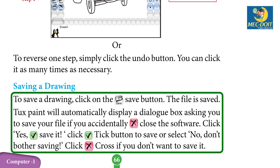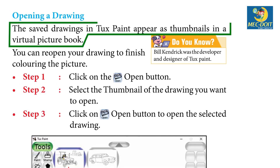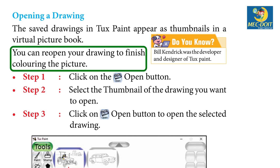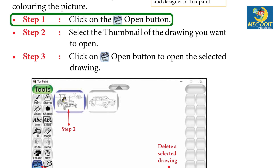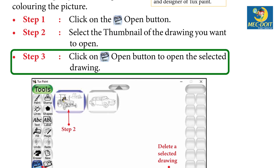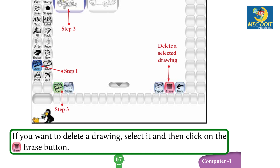Opening a drawing. The saved drawing in Tux Paint appears as thumbnails in a virtual picture book. Do you know? Bill Kendrick was the developer and designer of Tux Paint. You can re-open your drawing to finish coloring the picture. Step 1: Click on the open button. Step 2: Select the thumbnail of the drawing you want to open. Step 3: Click on the open button to open the selected drawing. If you want to delete a drawing, select it and then click on the erase button.